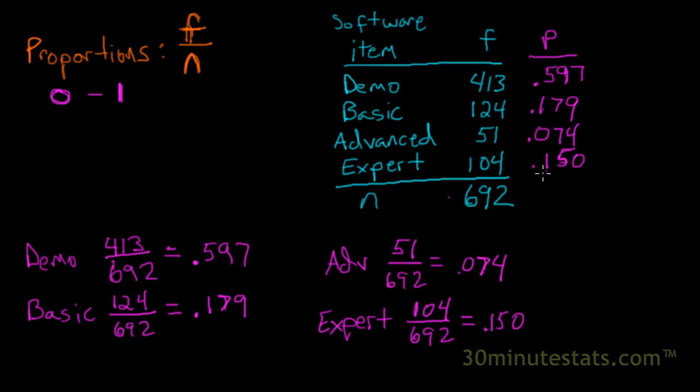As a nice double check, because proportions range in value from 0 to 1, if we calculate the proportions for each category in this variable and then add up those proportions, they should add up to a value of 1.0. If we add them up, you'll find that they do add up to 1.0. That's a nice double check on our work. If the proportions don't add up to 1, then there's probably something wrong.